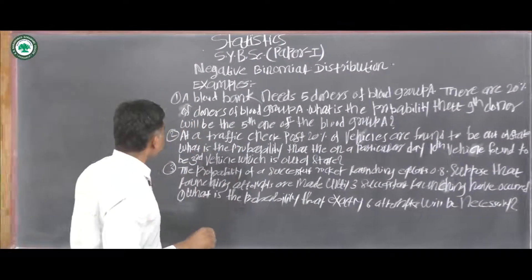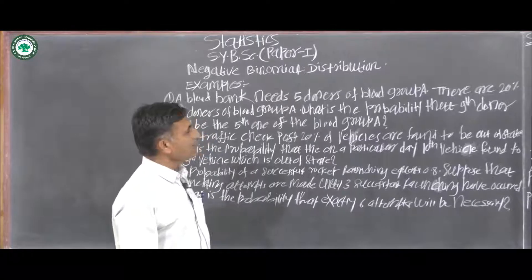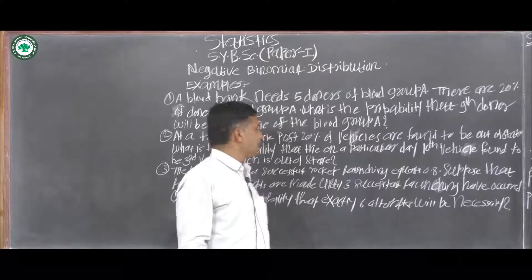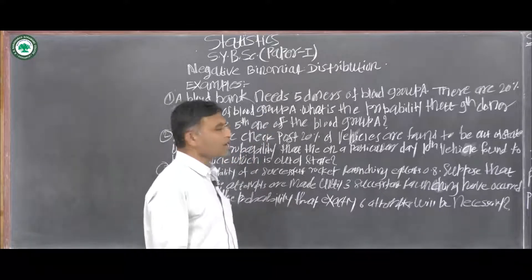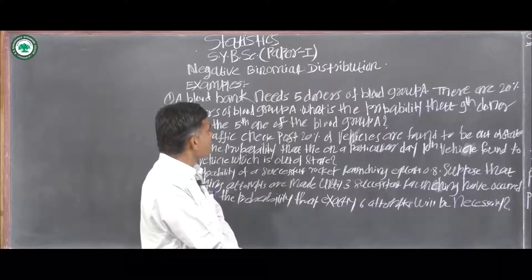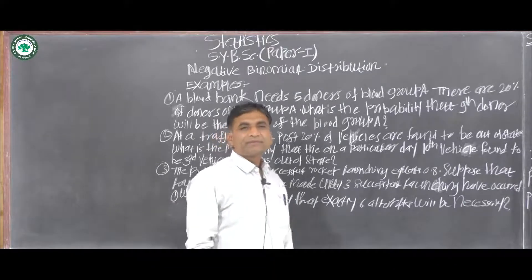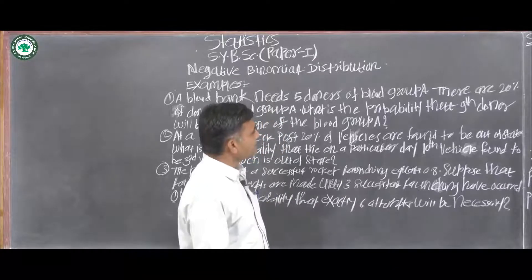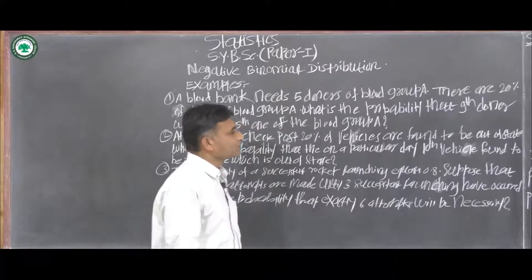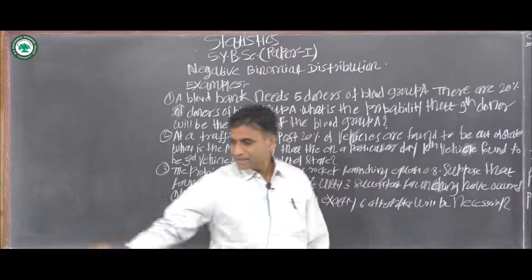The second problem: at a traffic checkpoint, 20% of the vehicles are found to be out of state. What is the probability that on a particular day the 10th vehicle is the 3rd vehicle which is out of state? Here P equals 20%, that is 0.2; Q equals 0.8; K equals 3; and X plus K equals 10.